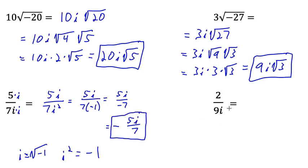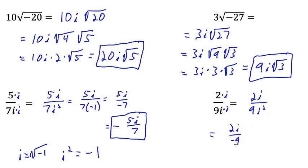Let's try one more like that. We'll multiply the top and bottom by i — we're allowed to do that because as long as you multiply the top and bottom by the same thing, we're really just multiplying by 1. So that gives us 2i over 9i². i² equals negative 1, so this equals 2i over negative 9, because 9 times negative 1 is negative 9. We move the negative sign up front to get negative 2i over 9.